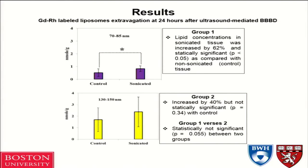Since the liposomes are fluorescently labeled, we measured the lipid concentration by measuring the fluorescence signal intensity in bulk tissue. This is the concentration of lipids in control versus sonicated tissue. We could see an increase of 62% on sonicated cases versus control, which is significantly enhanced. But in the bigger size liposomes, there is a 40% increase, which is not statistically significant. When we compare the two groups, it is on the borderline and not significant, but we experience a higher concentration of lipids on sonicated tissue when the particle size was smaller.